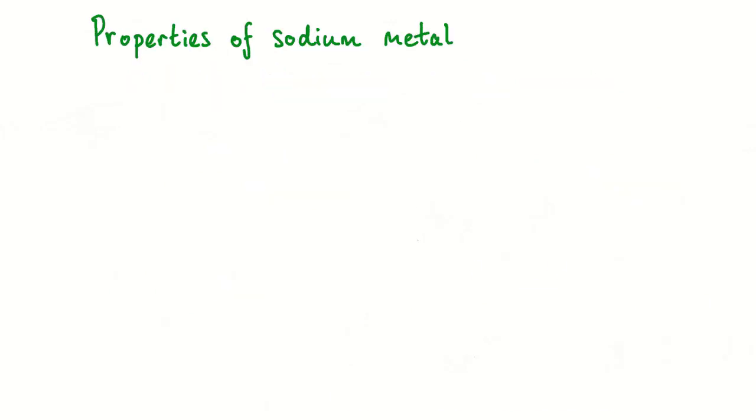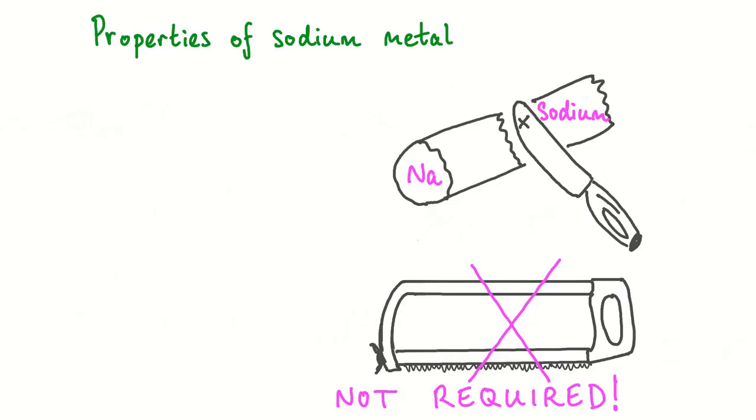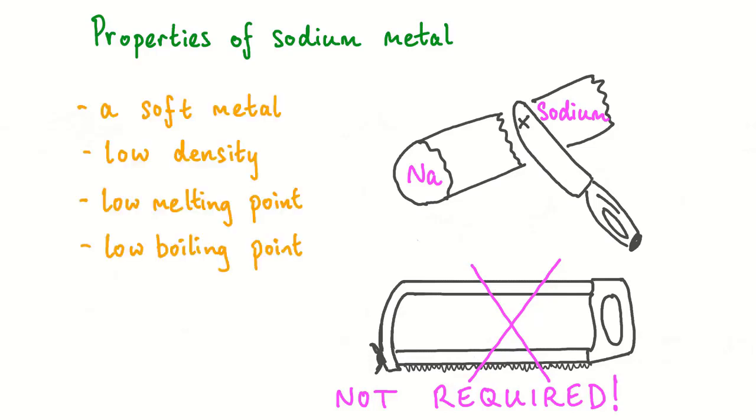Now we'll look at some of the properties of sodium metal. As a metal, sodium has some rather unusual properties when compared with the properties of other typical metals. Physically, sodium is a soft metal with a low density and a low melting point and low boiling point.